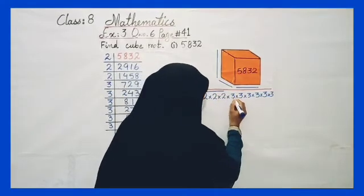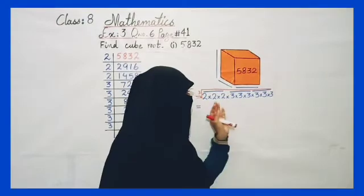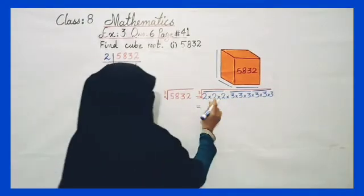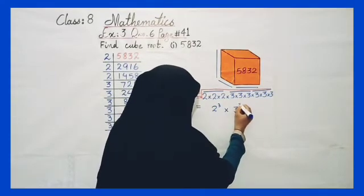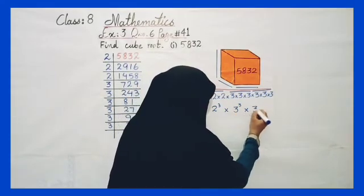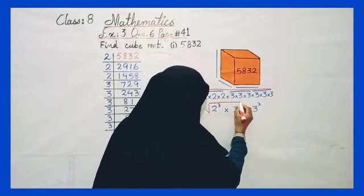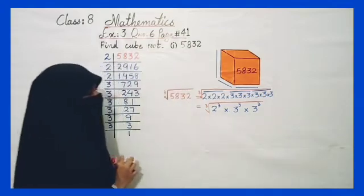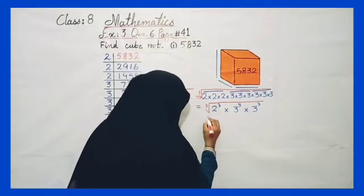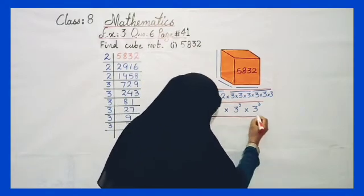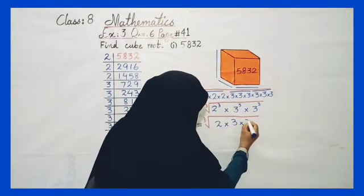We have 2s and 3s. We make groups of three 2s and three 3s. Each group of three means a cube. Since all prime factors form complete groups of three, we can combine them. Can we combine them all into a single result? Yes.